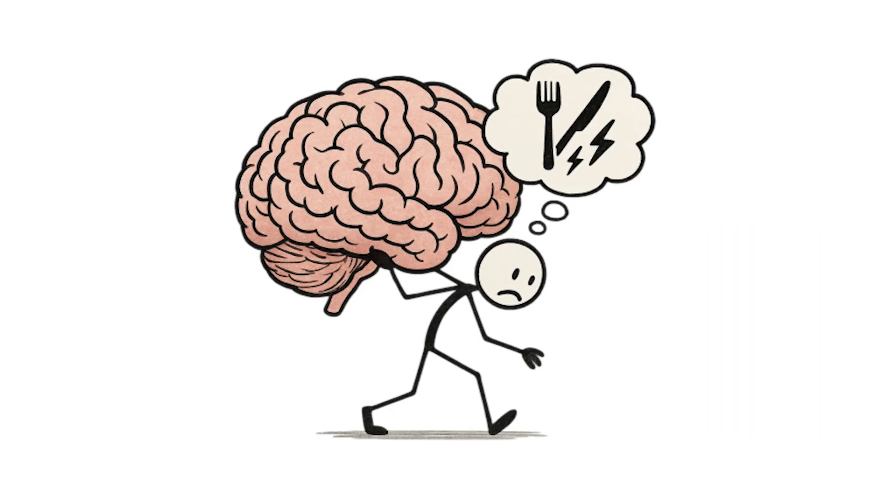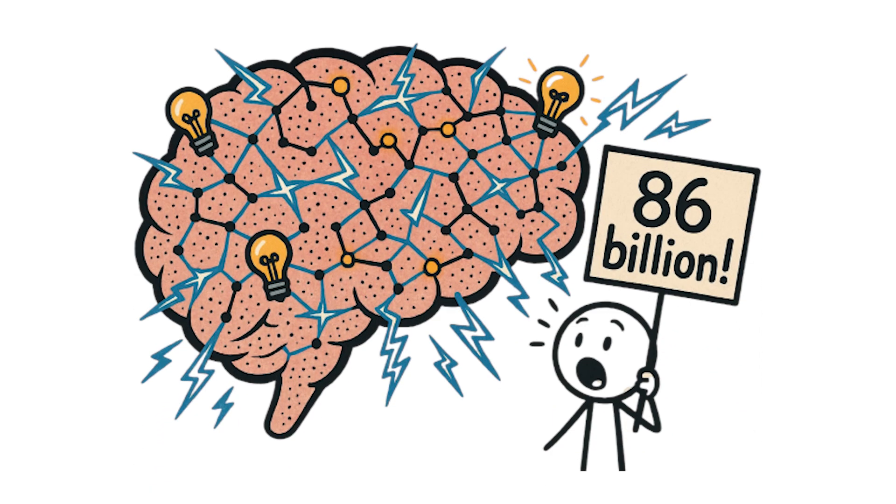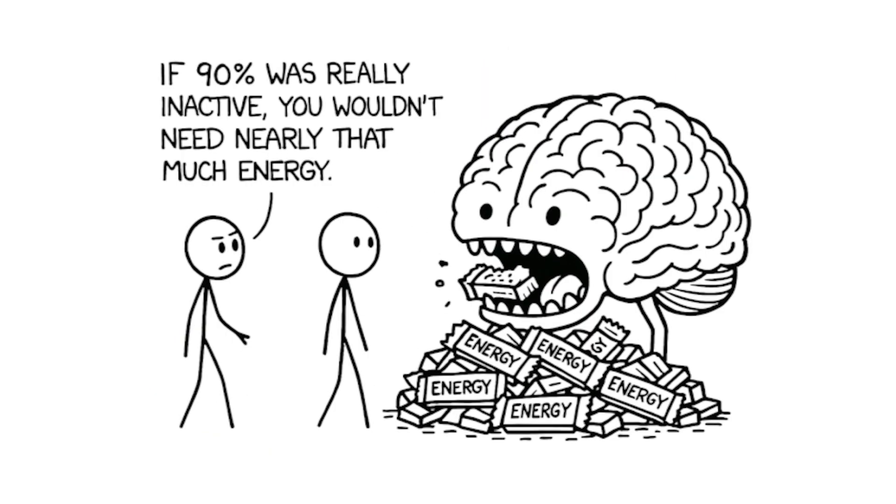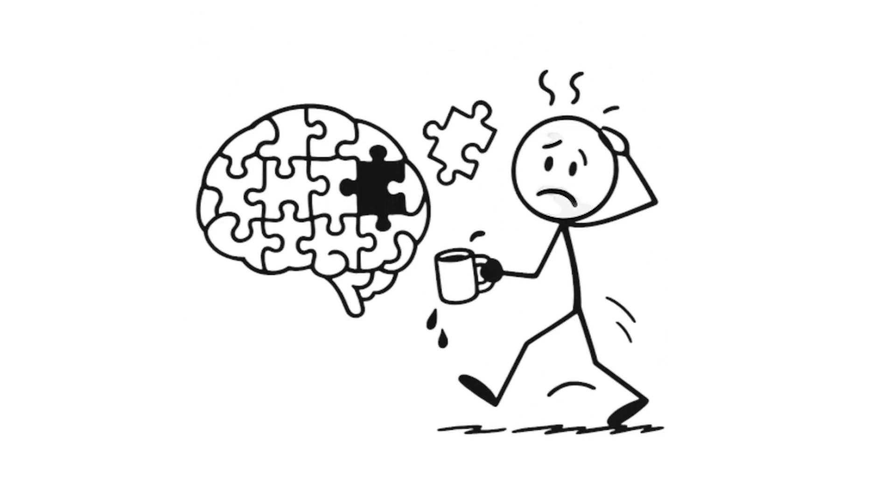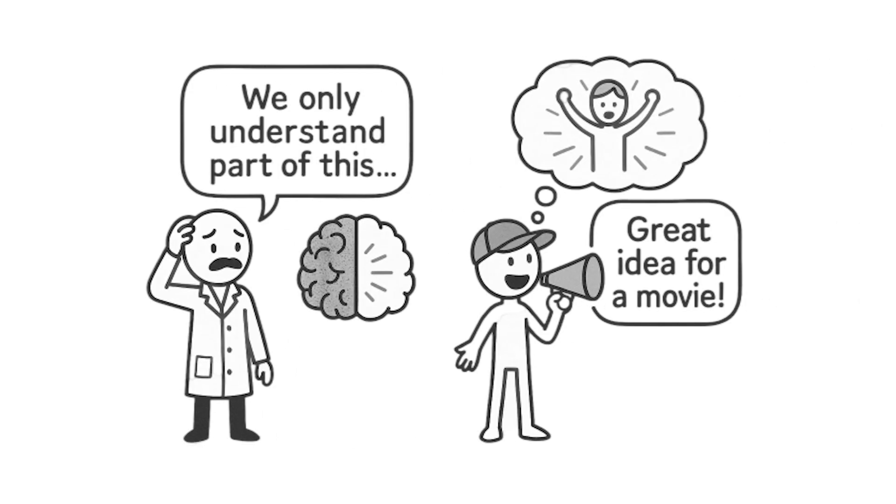Your brain consumes about 20% of your body's total energy, despite being only 2% of your weight. That's because all 86 billion neurons are constantly maintaining electrical potentials and firing signals. If 90% was really inactive, you wouldn't need nearly that much energy. Damage to even small brain regions causes noticeable deficits, proving every area has important functions. The myth likely originated from early neuroscience's incomplete understanding and got distorted through popular culture.